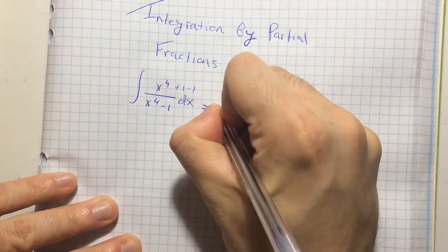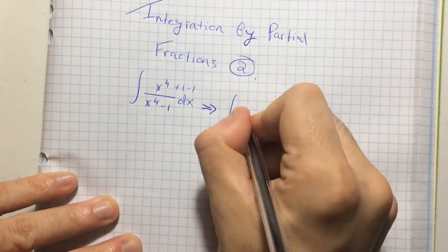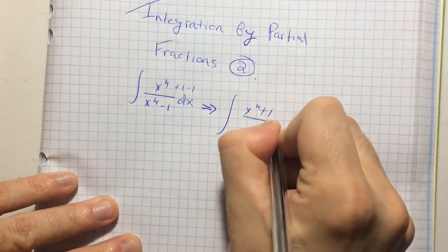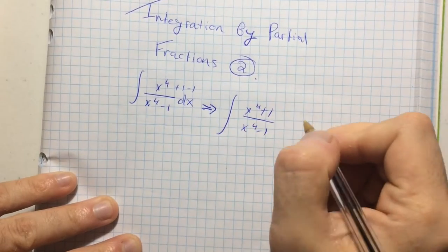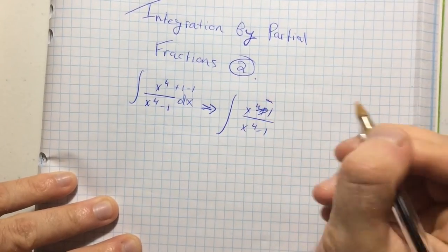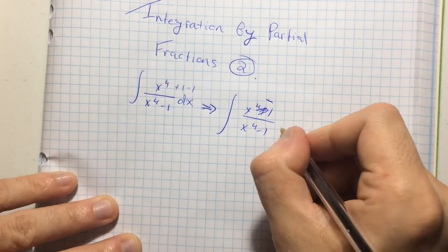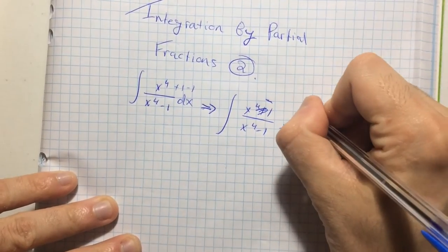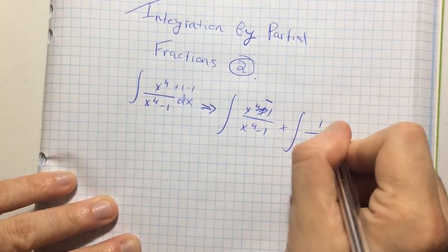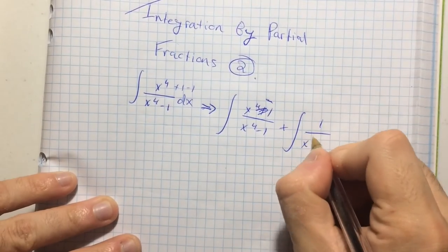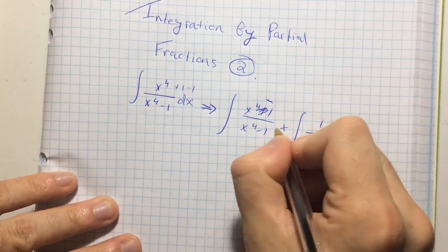This is going to be equivalent to the integral of x to the fourth plus one over x to the fourth minus one. Sorry, I'm going to include the minus one. Obvious reasons, though. Plus the integral of one over x to the fourth minus one dx. This is dx.